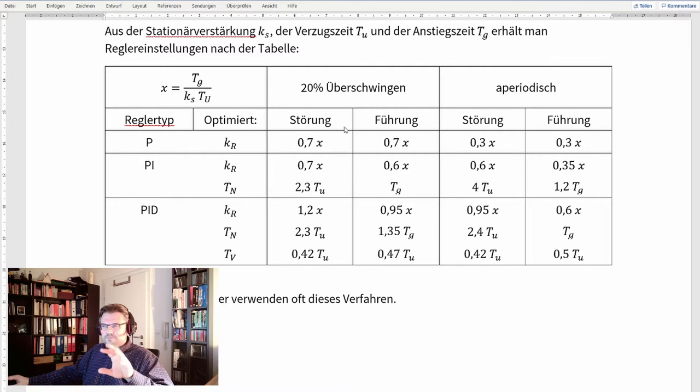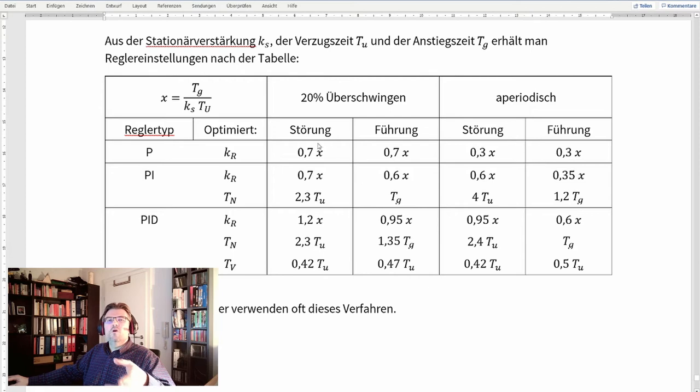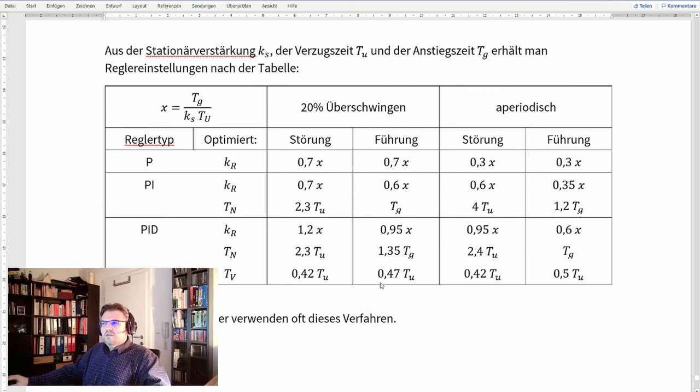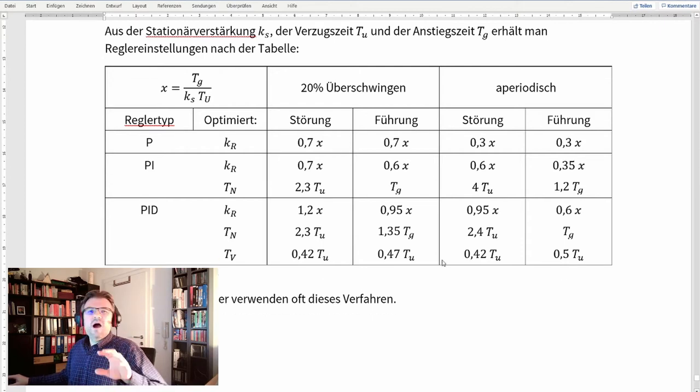If we want to have a good reference value behavior, we have the same. This is the disturbance behavior. These sets here, they are for 20 percent overshoot, and these sets here are for aperiodic, so no overshoot at all.